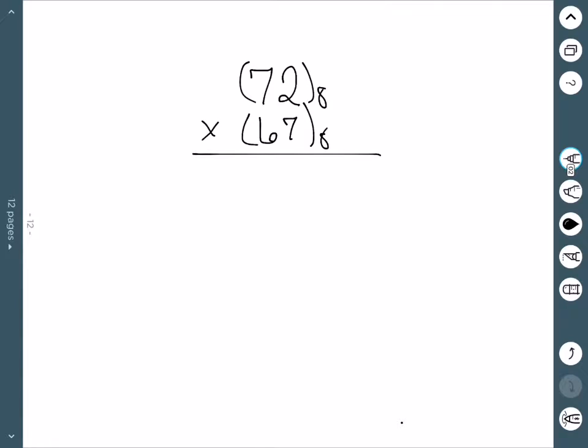A slightly more complicated multiplication example, 72 times 67 base 8. We start the same way, 7 times 2 is 14. So now the question is how many times does 8 go into 14? Well, once with 6 left over, so we carry the 1 and write down the 6.